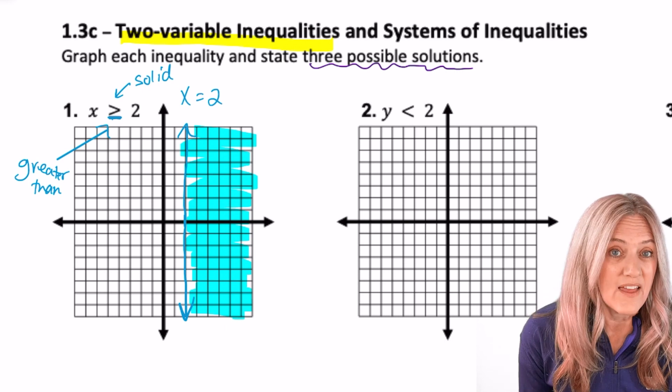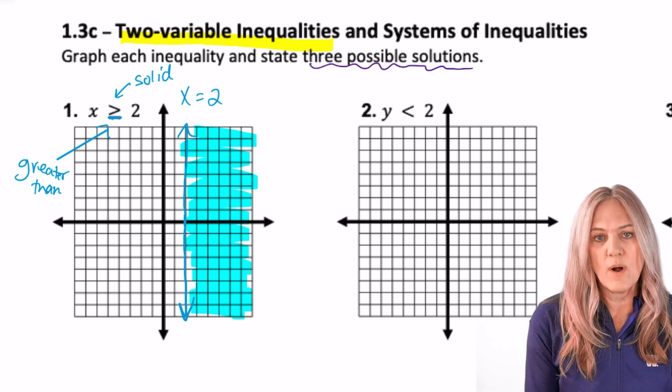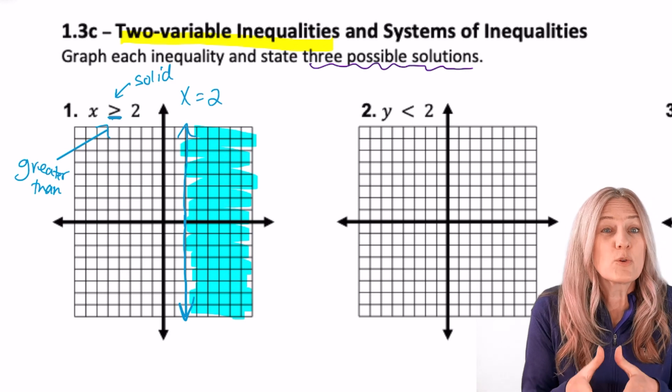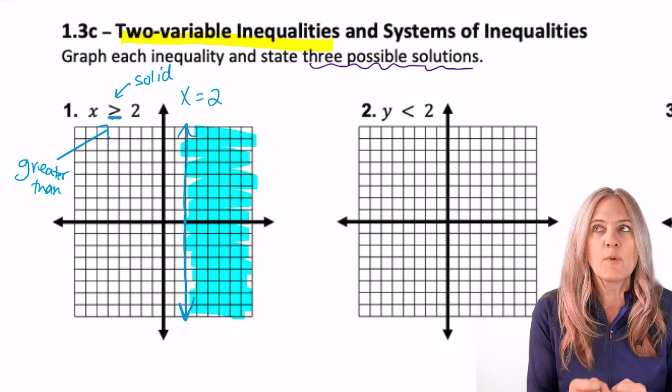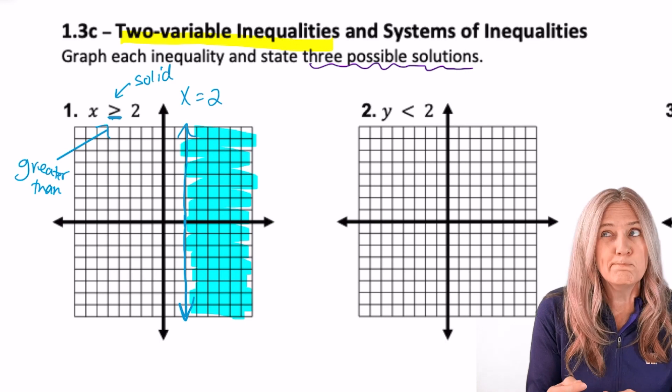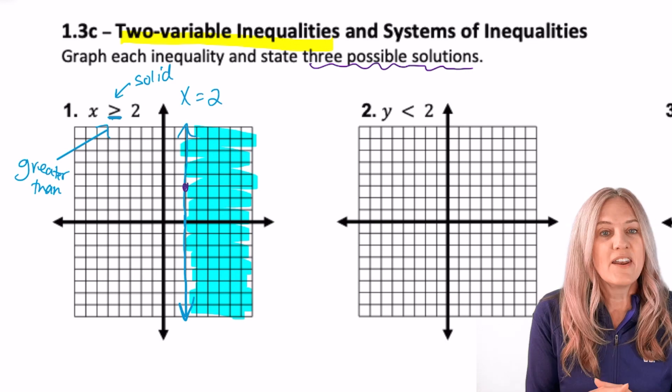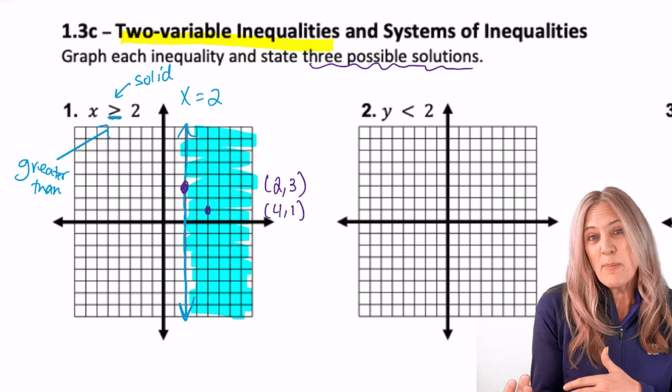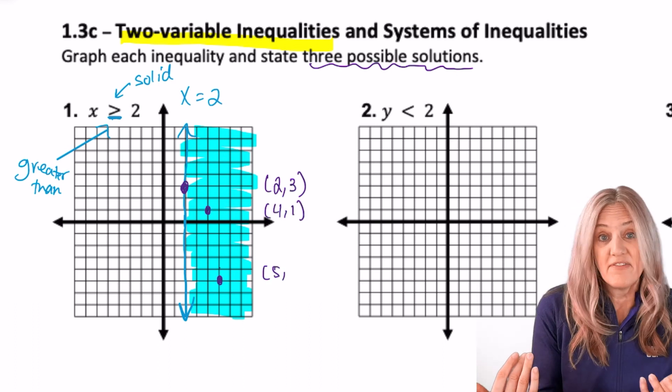Last, let's understand that the solution set to this inequality is all of the points in the shaded region plus the line. Let's name three possible solutions. One on the line would be 2, 3. Another one could be above the x-axis at 4, 1. And how about one from below the x-axis, 5, negative 5.